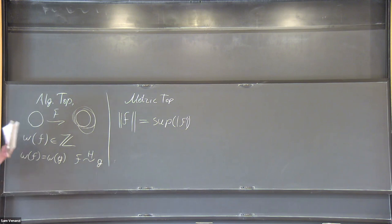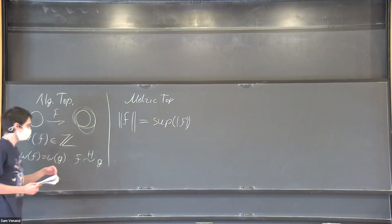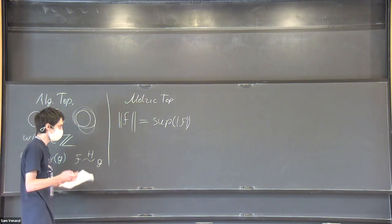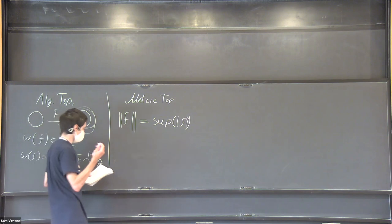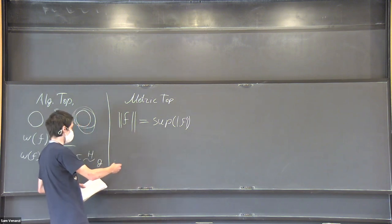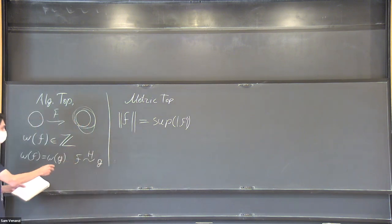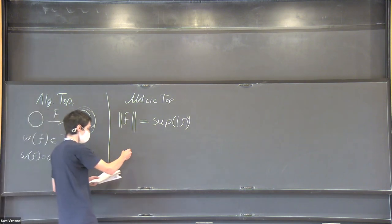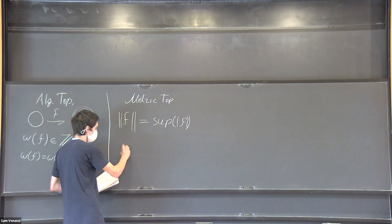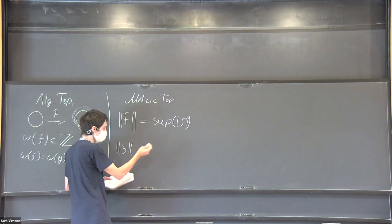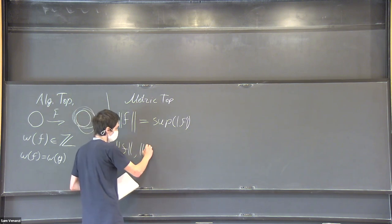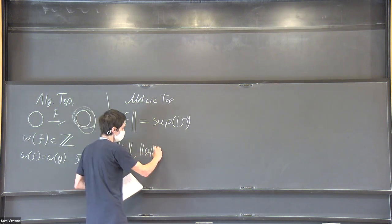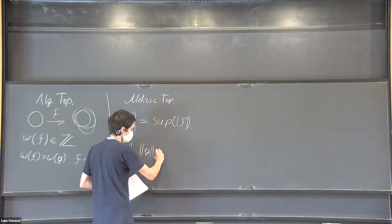Now on the metric side we can ask a rather simple question, illustrative of what will come next. So let us, in addition to f and g being homotopic to each other, assume that we know their norms, so let's say they're bounded by some number.